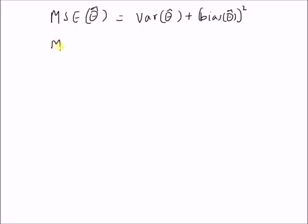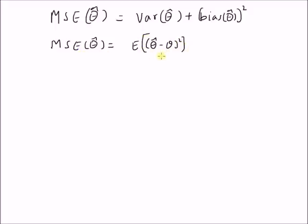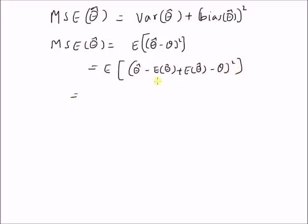Let us start with the definition of mean square error. MSE of theta hat is equal to expectation of theta hat minus the true value of theta, whole square. That is the definition of mean square error. We can rewrite this expectation as: expectation of theta hat minus expectation of theta hat plus expectation of theta hat minus theta, whole square.